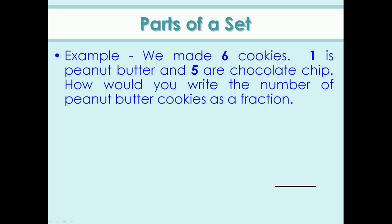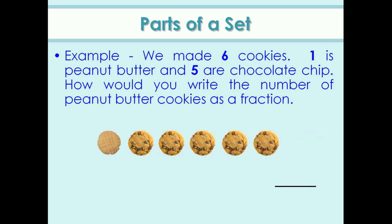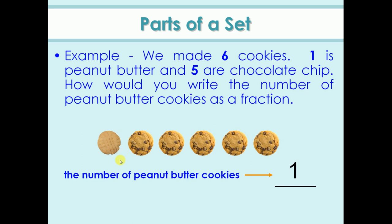Look at another example. We made six cookies — one is peanut butter and five are chocolate chip. How would you write the number of peanut butter cookies as a fraction? The number of peanut butter cookies is one, so you write one on top. The total number of cookies is six. So the fraction is one by six.